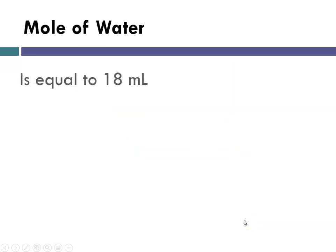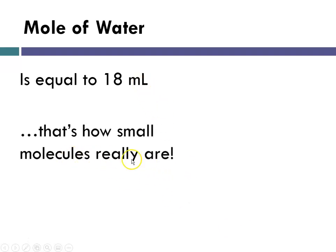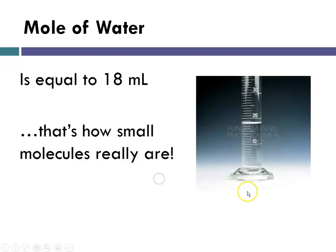What about a mole of water? It turns out that a mole of water is equal to 18 milliliters. And that tells you how small molecules really are. So if I had my little graduated cylinder and I put water in it, when I get to 18 mils, that's the same as one mole of water.